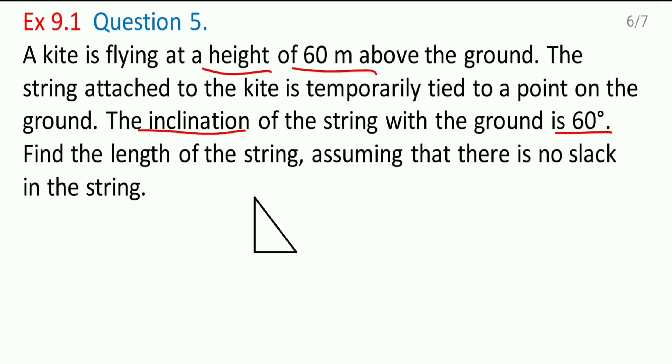Let us see the figure here. This one. This height is 60 meters. At this place the kite is there. And this is the point which is there on the ground. They are saying the angle of inclination is 60 degrees. This angle is 60 degrees.